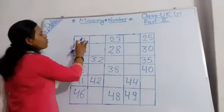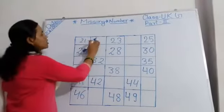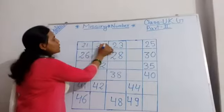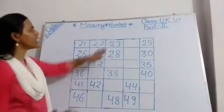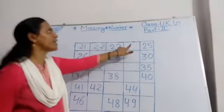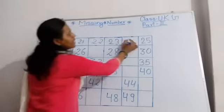Start at 21. 21 after 22, but 22 is missing, so write down 22. 22 after 23, 23 after 24. But 24 is missing, so write down 24.